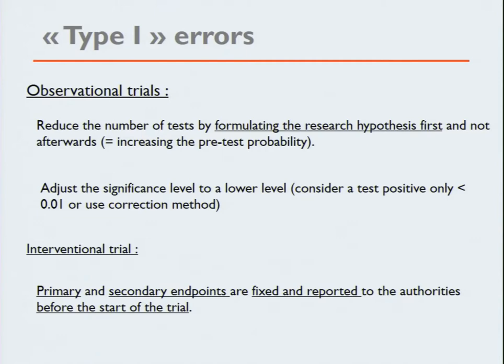Not formulating the hypothesis afterwards. And you can adjust the significance level to a lower level — you have Bonferroni adjustments and so on — or for instance say you will only use differences with a p-value at 0.01 level. For interventional trials, that's the reason why primary and secondary endpoints are fixed and reported to the authorities before the start of the trial — because then you can only perform one or two p-values, you have the pre-test probability, and you cannot change your primary endpoint afterwards, searching until you find a difference.